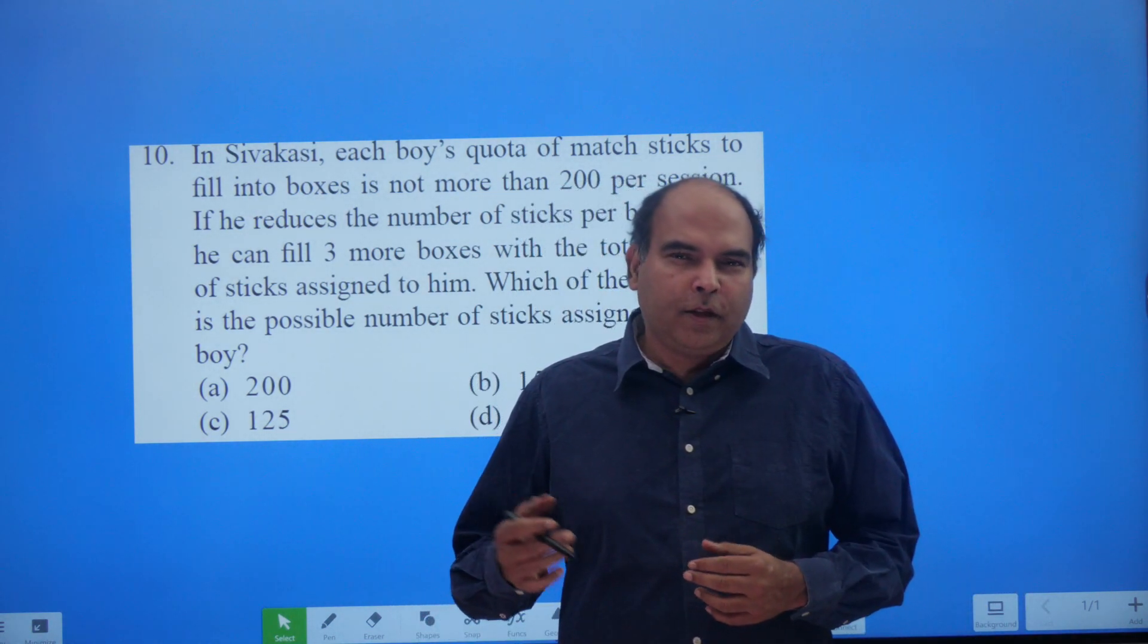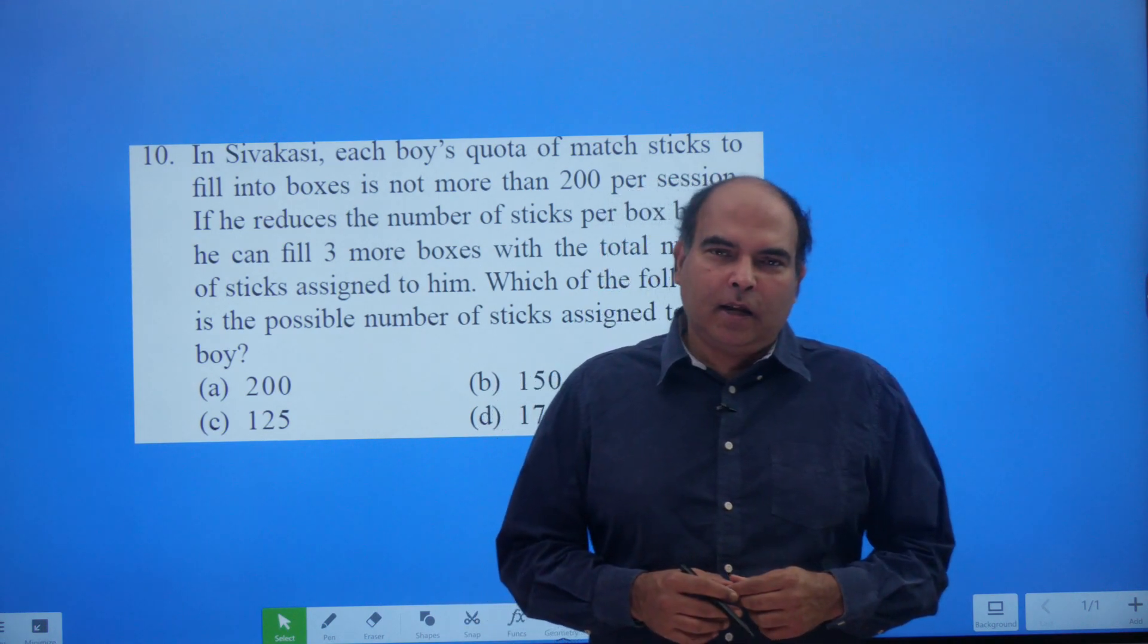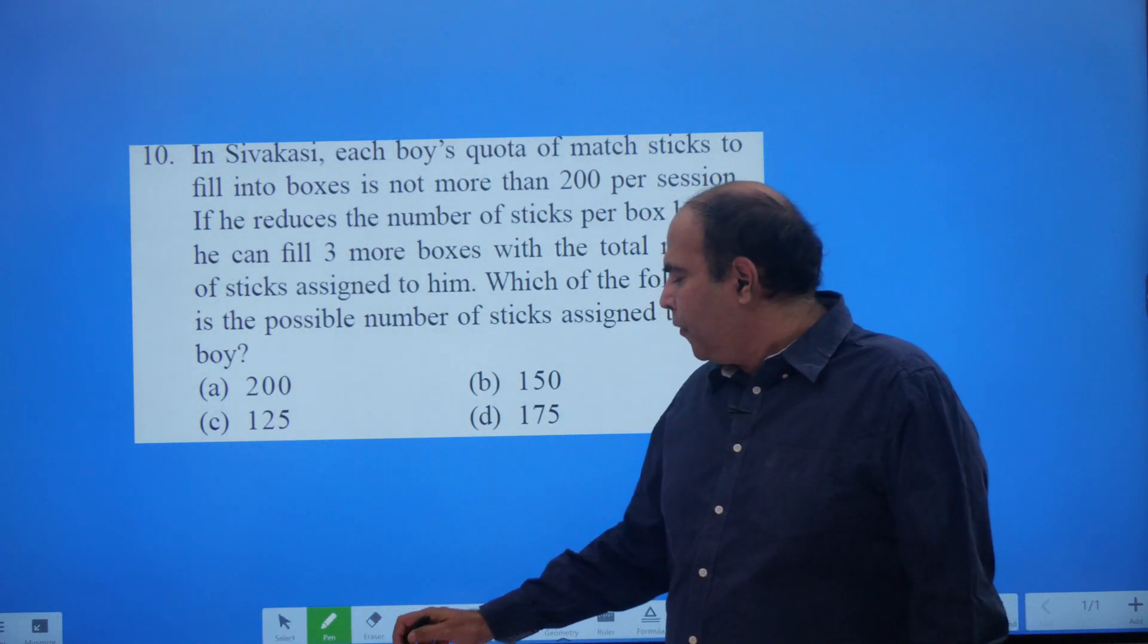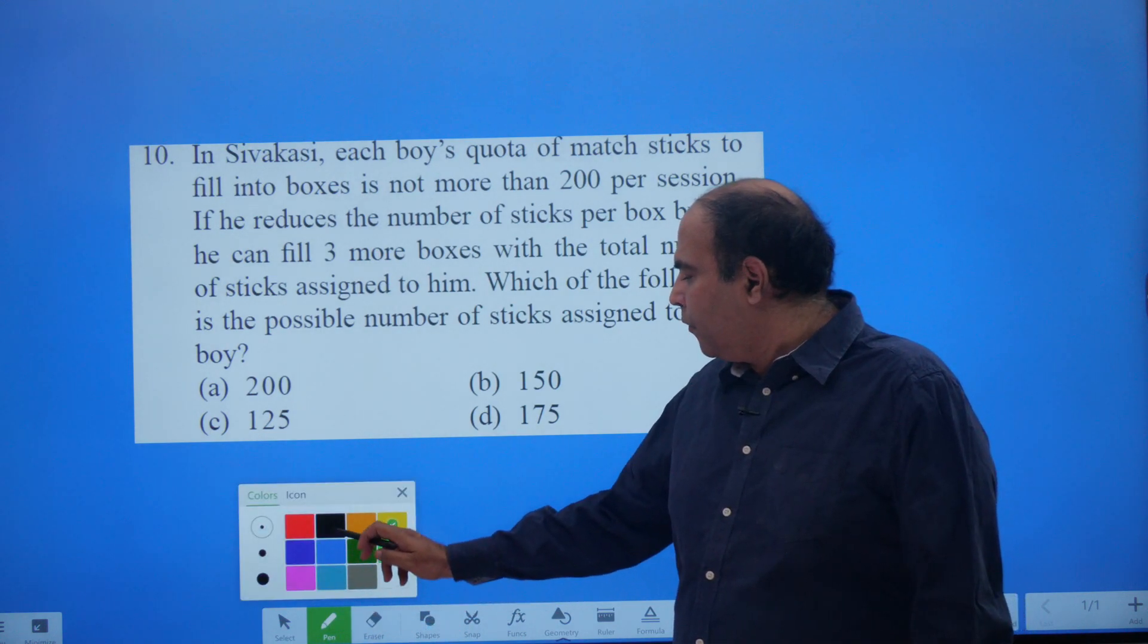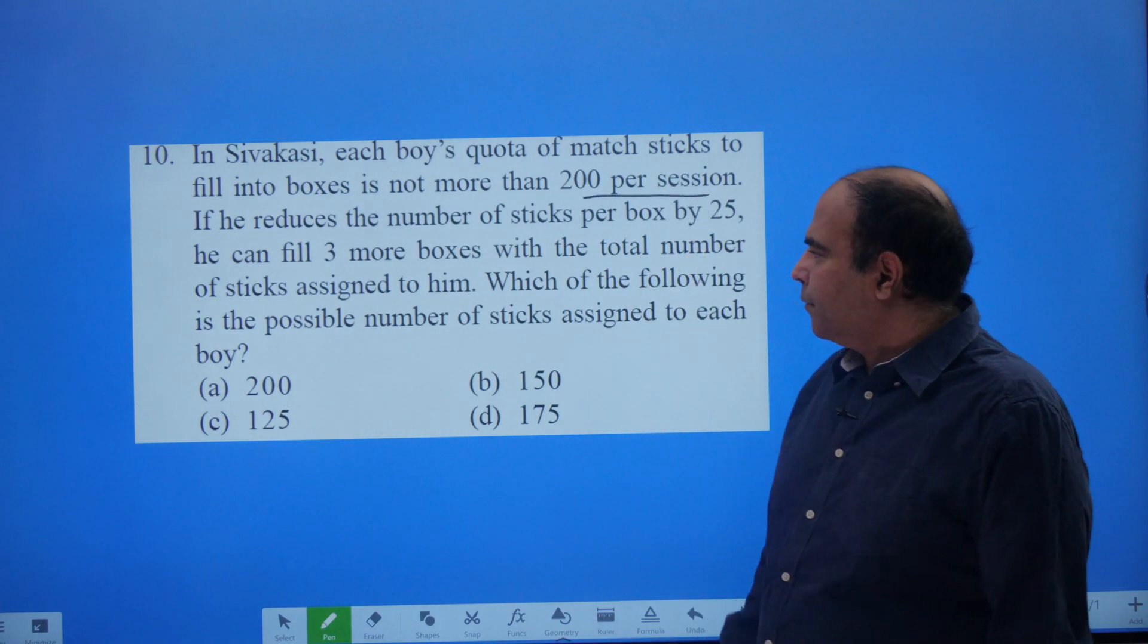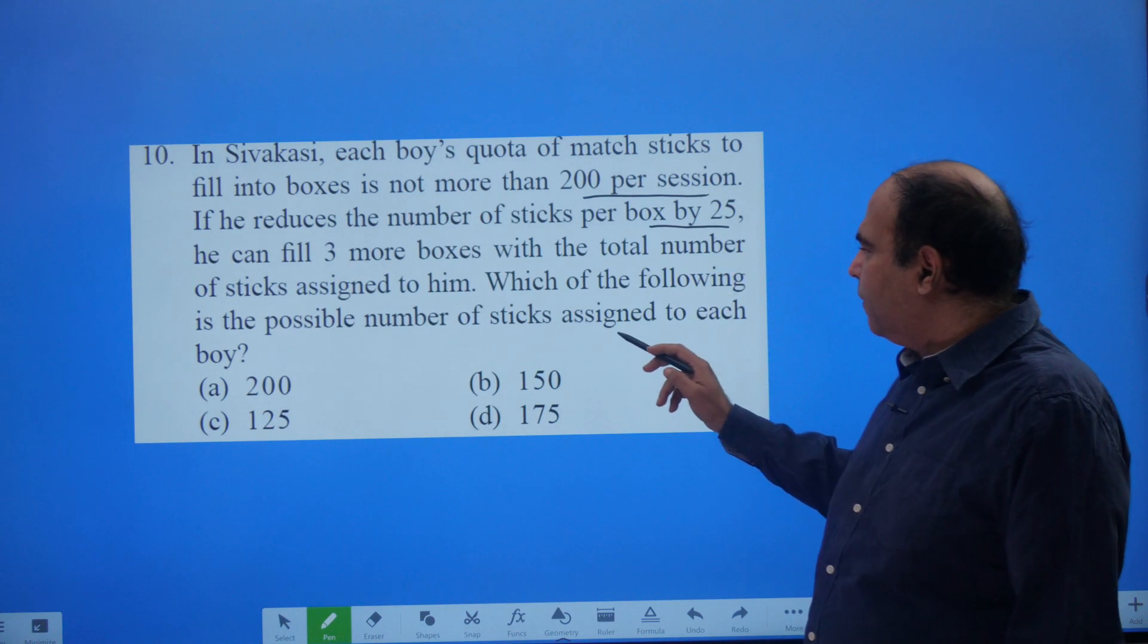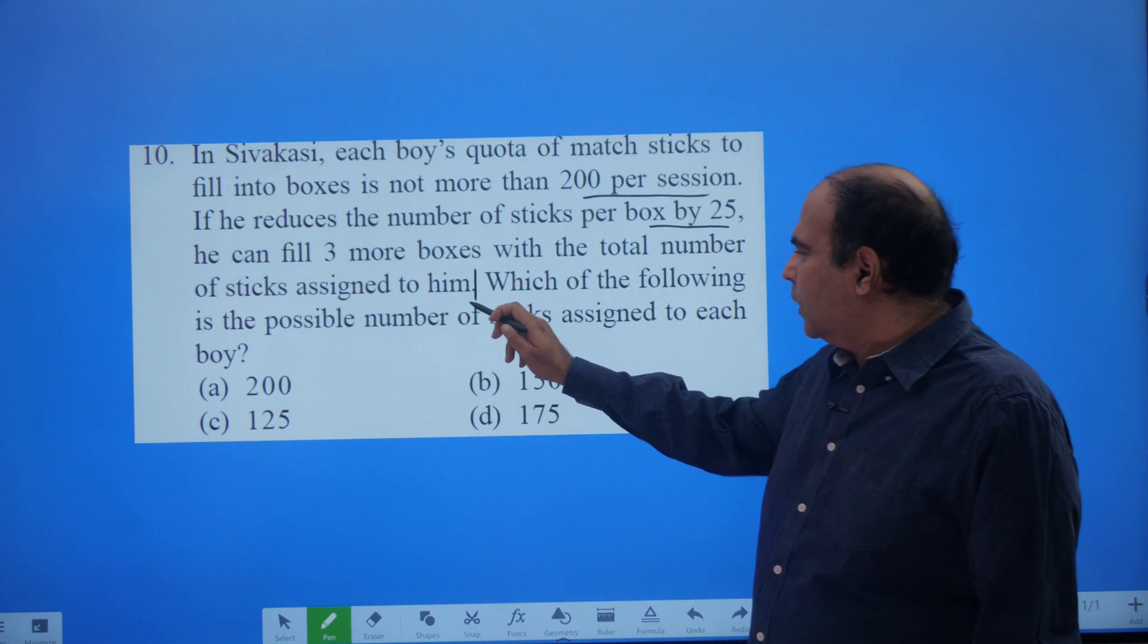This is a factor pair based question. In fact, finding factor pairs of numbers is a critical skill that you should develop for numbers all the way to 250, 300. Let's look at this question. The question says in Sivakasi, each boy's quota of match sticks to fill into boxes not more than 200 per session. If he reduces the number of sticks per box by 25, he can fill three more boxes with the total number of sticks assigned to him.